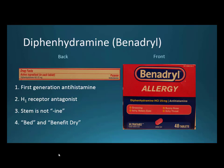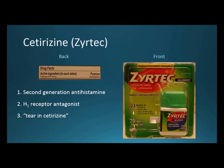Now we go to second-generation antihistamines that aren't supposed to cause sedation. Alphabetically, cetirizine comes first — brand name Zyrtec — then loratadine, brand name Claritin. Cetirizine is a second-generation antihistamine and an H1 receptor antagonist. Be careful: Benadryl is a first-generation H1 receptor antagonist, while cetirizine and loratadine are second-generation but still H1. Students sometimes get the generation versus the receptor number mixed up.